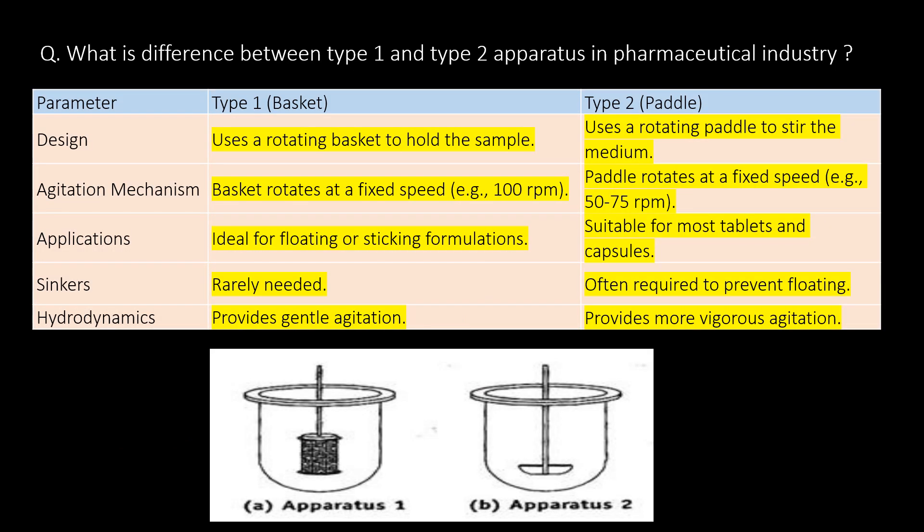What is the difference between Type 1 and Type 2 apparatus in the pharmaceutical industry? You can refer to the bullet table to differentiate between Type 1 and Type 2 apparatus. Various parameters like design, agitation mechanism, application, sinkers, and hydrodynamics are covered in this table.